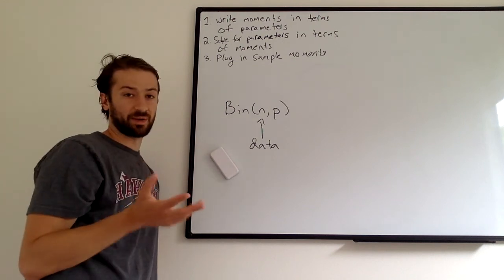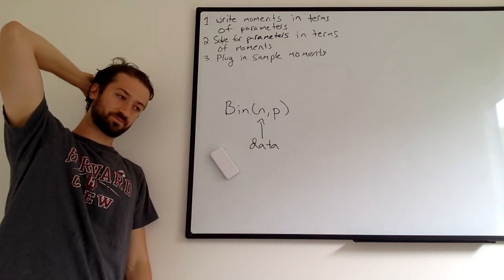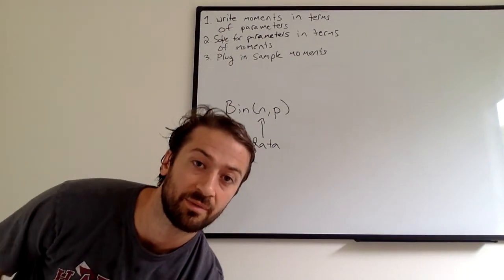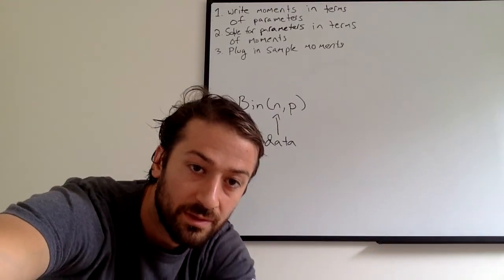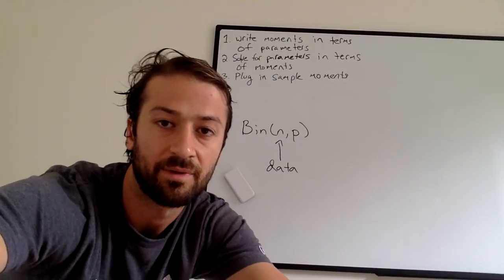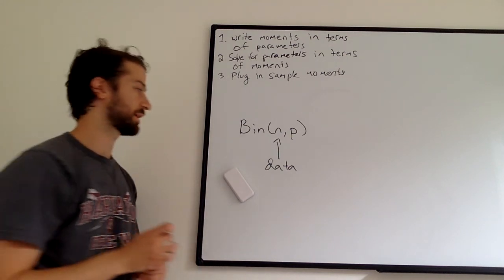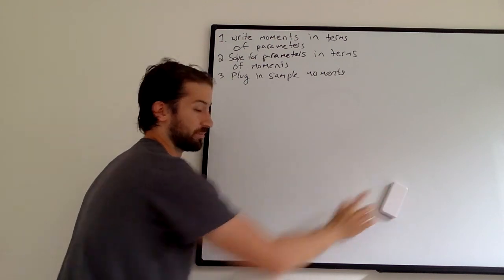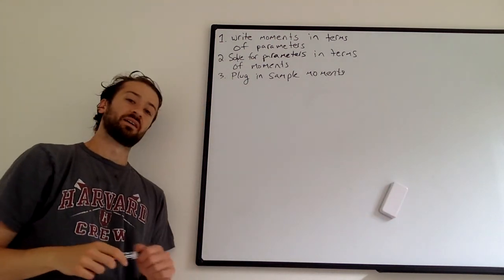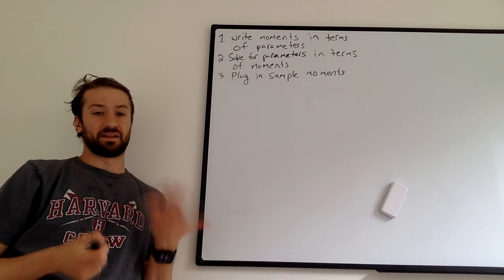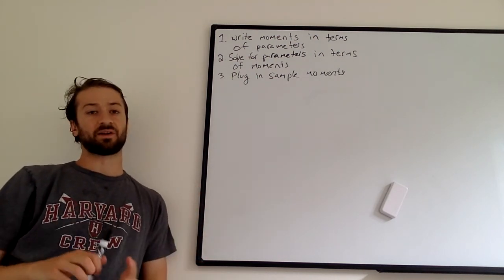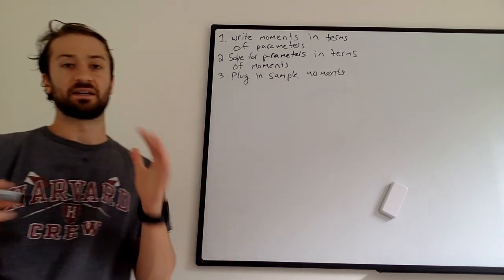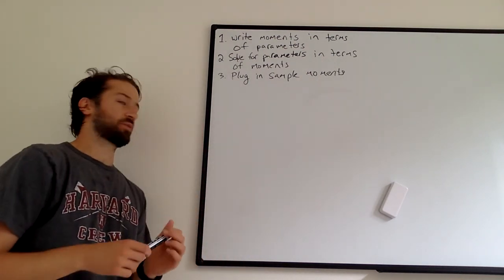Inference has a lot of real life applications dealing with real data, and we're basically trying to figure out what the true parameters are, but it still has a lot of theory that we use to approach these real life problems. Today we're talking about what we're going to call the method of moments estimator. Estimators are a big part of inference — they let us estimate what the true parameters are. Method of moments is perhaps the simplest, step-one sort of idea for estimating parameters.